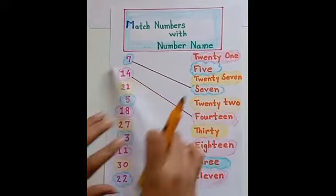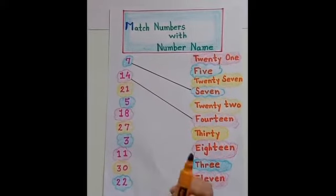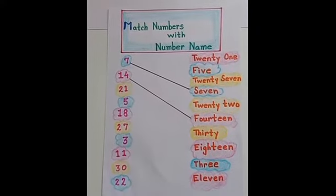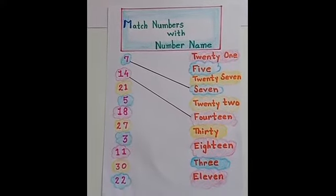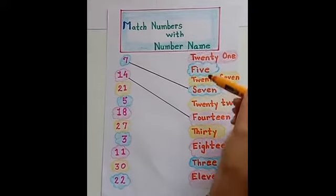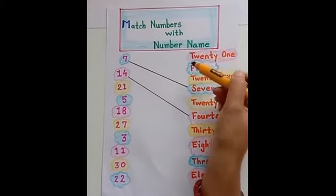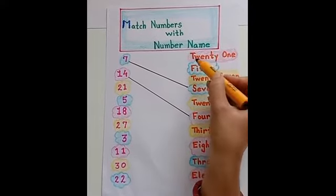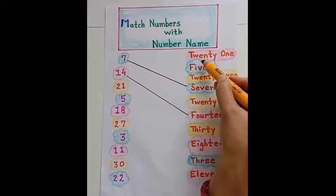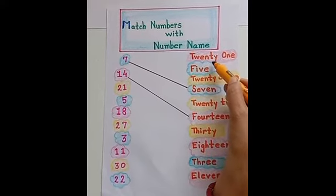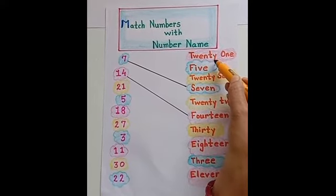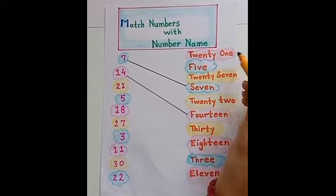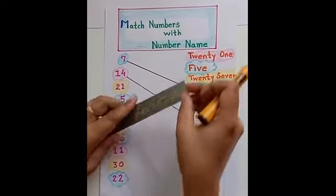Now next number is 21. Let's find out. Here it is - T-W-E-N-T-Y, 20, O-N-E, 1. 21. Let's match it.